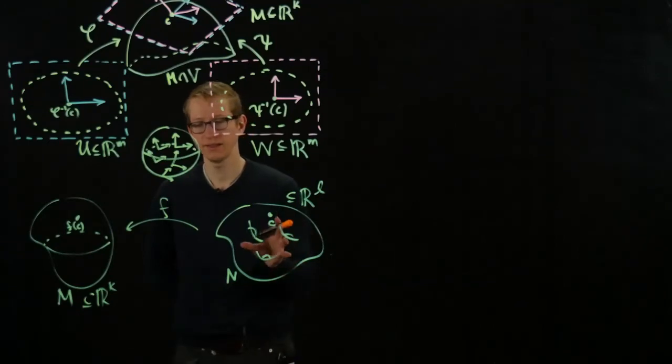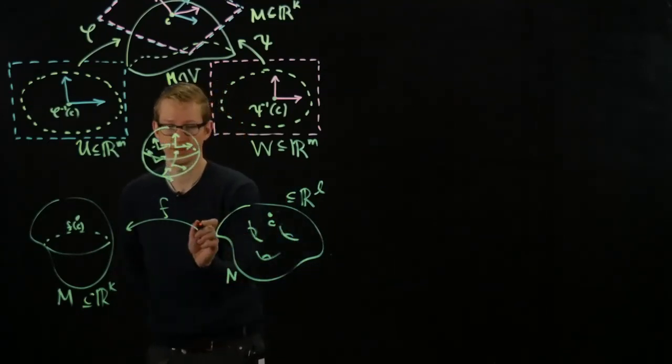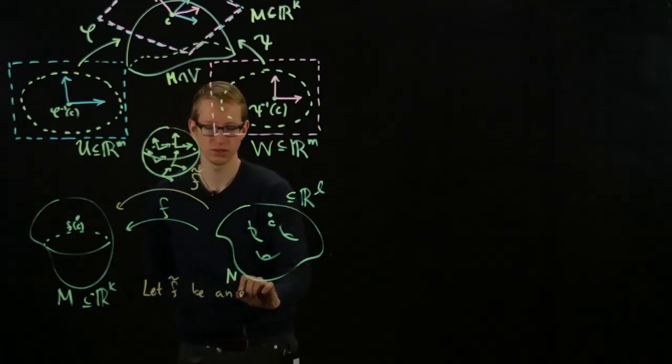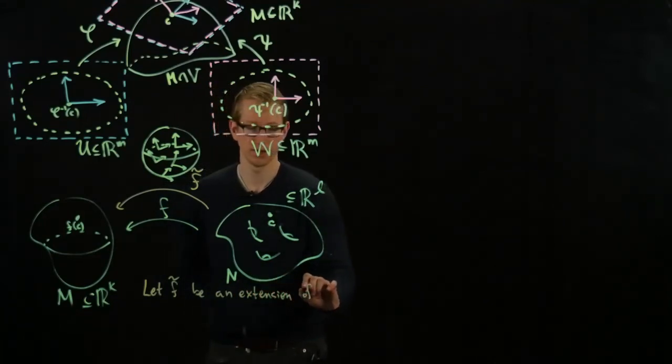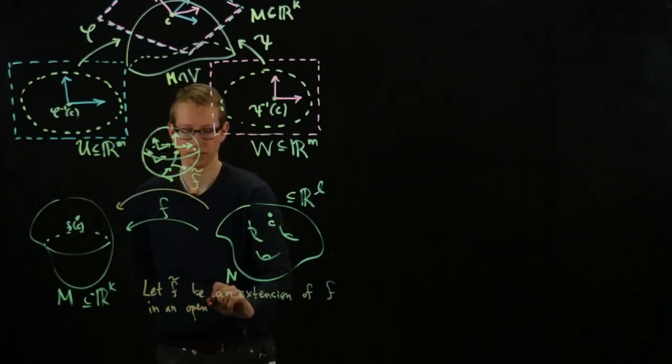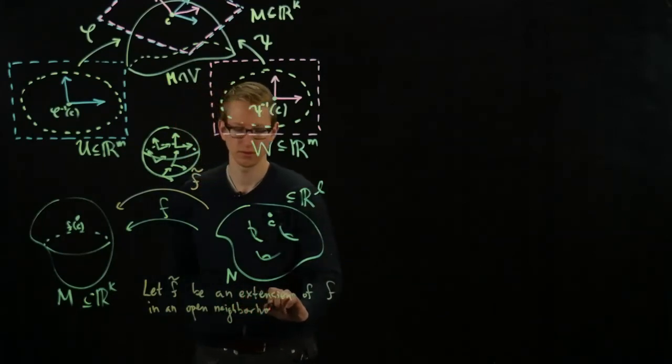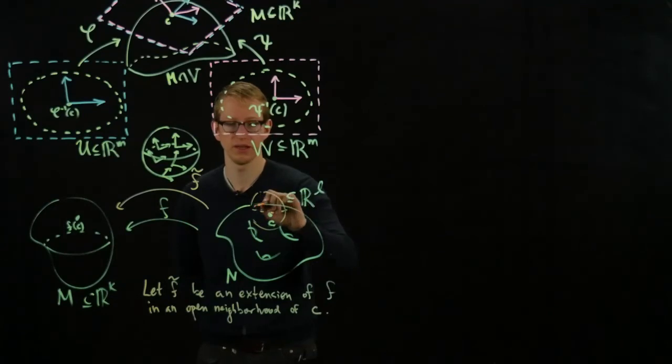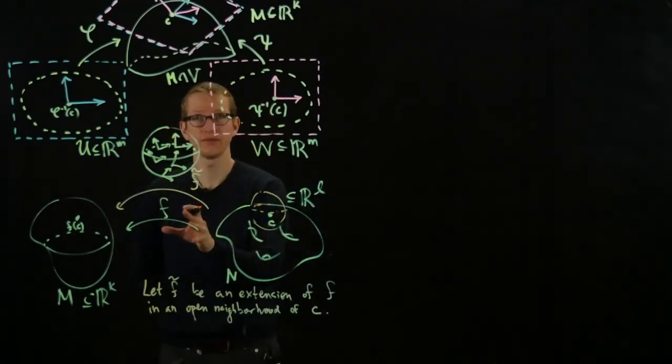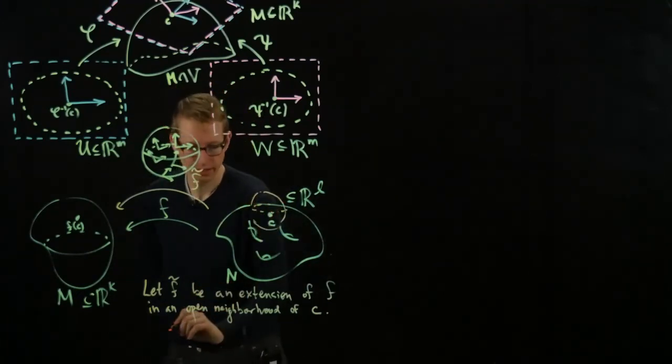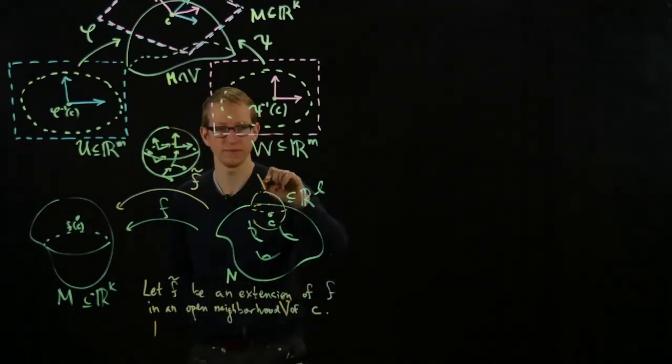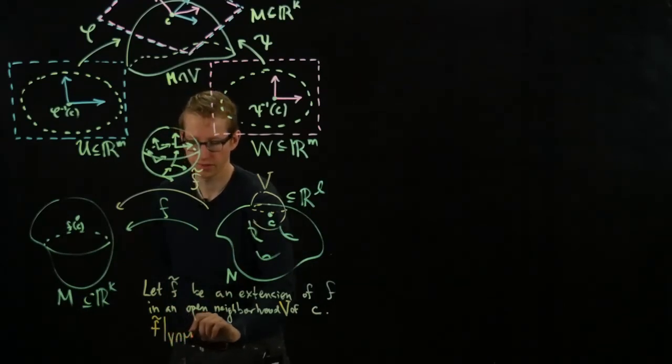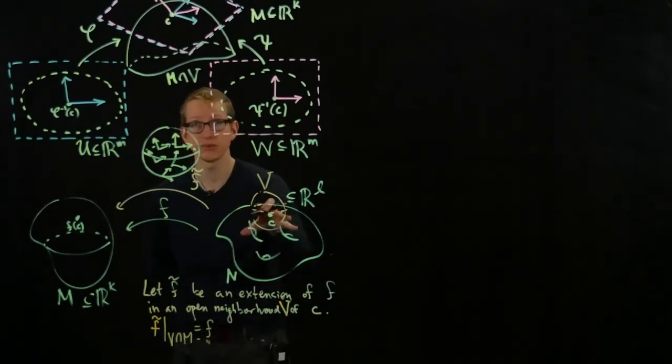How can we do that? So for manifolds, what we can do is we can define the differential by first choosing an extension of F. Let me draw this above it a little bit. F, let's call it tilde. So let F tilde be an extension of F in an open neighborhood of C. So we have some open ball - it could be an open ball, for instance, it doesn't have to be, as long as it's some open set containing the point C. And we extend our function F to some function on this open ball. And there, that defines - so let's see, an open neighborhood V, let's call that open neighborhood V. Then, being an extension, by the way, means that F tilde, when restricted to V intersect M, equals F. So we have to first make sure that our function is consistent with the function we initially had.